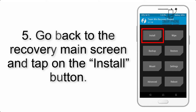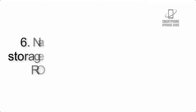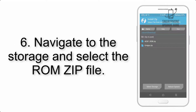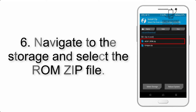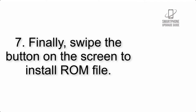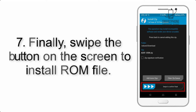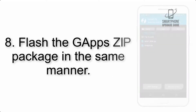Step 5: Go back to the recovery main screen and tap on the Install button. Step 6: Navigate to the storage and select the ROM zip file. Step 7: Finally, swipe the button on the screen to install the ROM file.